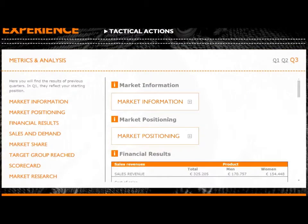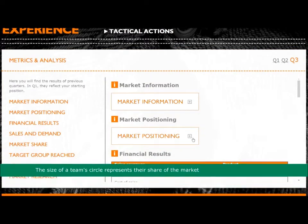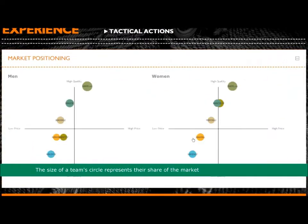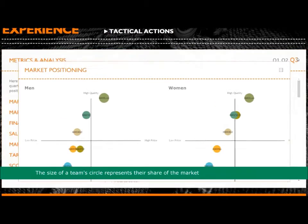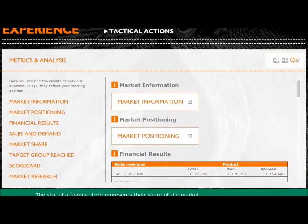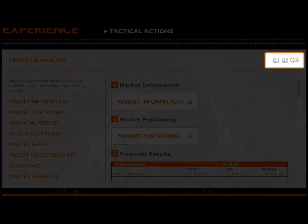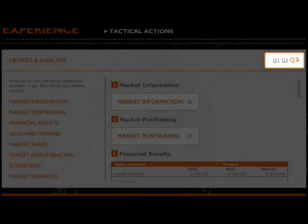Market positioning is updated every quarter to reflect the current state of play in the market. Teams can click back through the quarters and see how their position has changed throughout the game, reflecting their tactical actions and success or failure of their evolving strategy and those of their competitors.